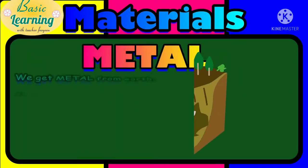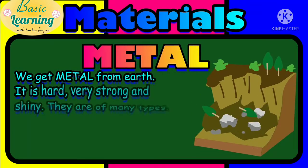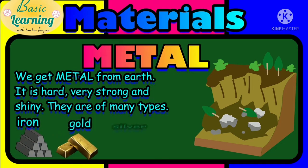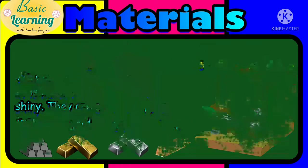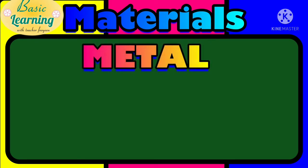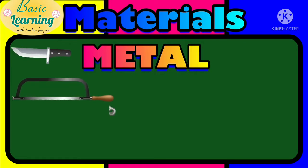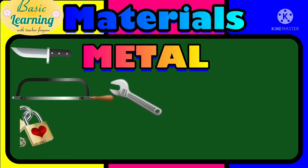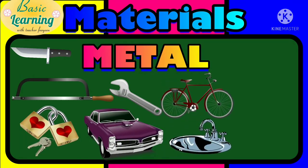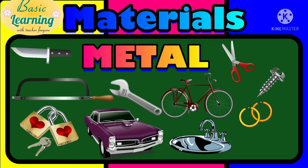Our second type of material is metal. We get metal from the earth or underground. It is hard, very strong, heavy, and shiny. There are many types of metals such as iron, gold, silver, and copper. Here are some examples: knife, saw, a wrench, lock and keys, your car, your bicycle, even the kitchen sink, scissors, a screw, gold bangles and other jewelries, and kitchen tools like graters.